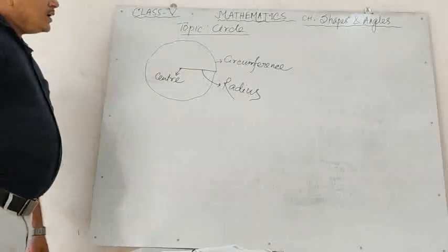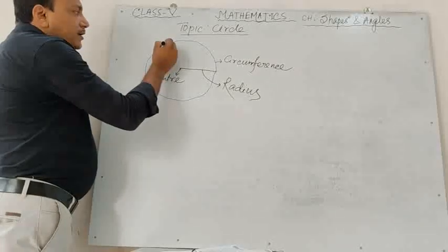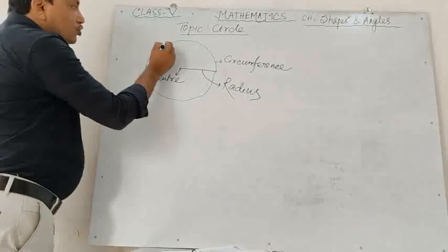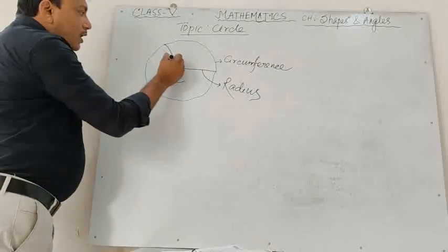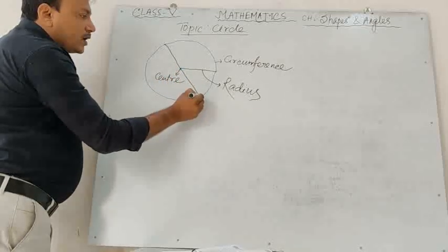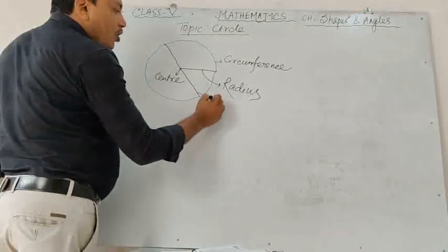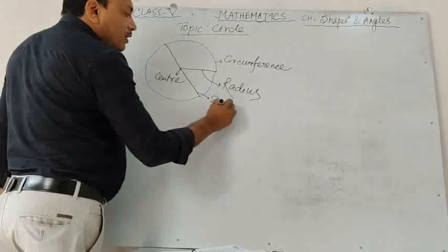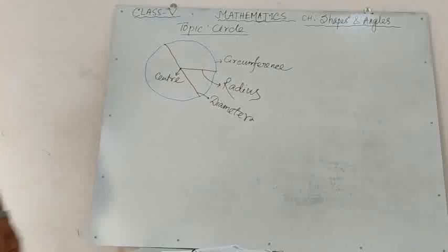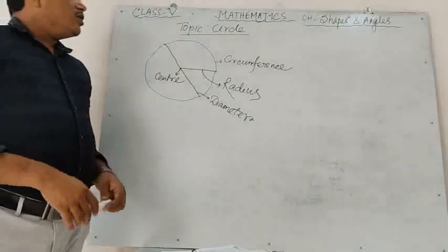If I take a line starting from one end of a circle, through the center, to the other end of the circle, that line is called the diameter of the circle.